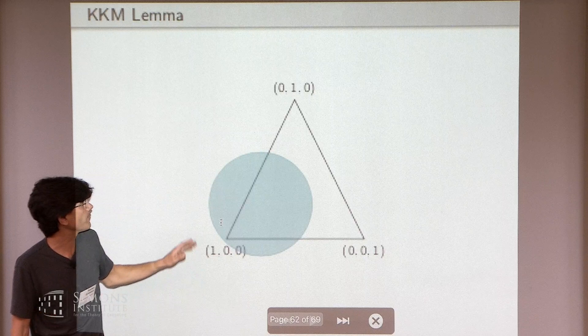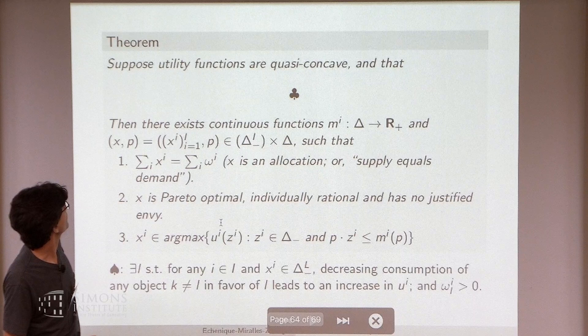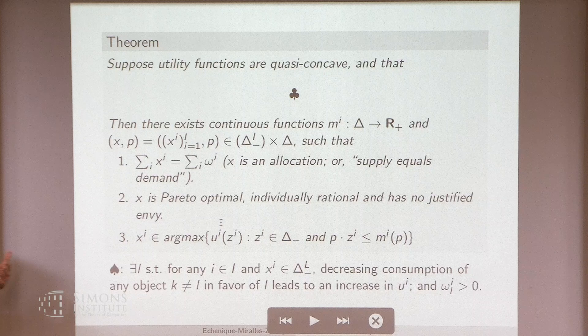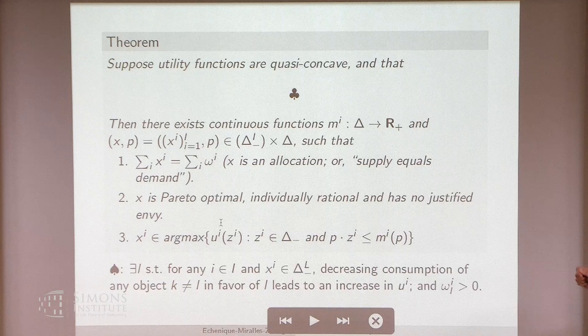The KKM lemma is a cousin of Sperner's lemma — a fixed-point type of idea, not algorithmic. The spadesuit condition is a technical condition — it has economic meaning, but it's technical because you can give a totally different condition with different economic meaning that also does the work. It's there to bridge the gap between quasi-equilibrium and equilibrium — something about the behavior of the income close to the boundary of the simplex.